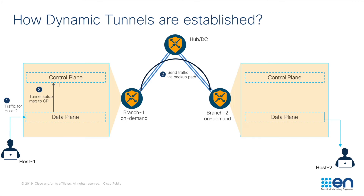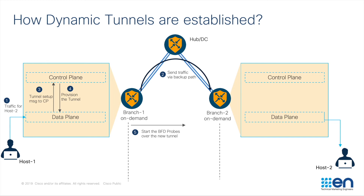The control plane will respond and direct the data plane to provision a tunnel towards branch 2. Branch 1 will now send BFD probes over this new tunnel. At this stage, BFD probes are just sent in one direction only.